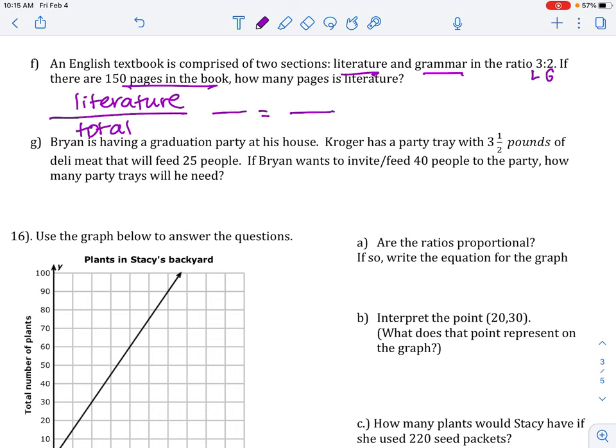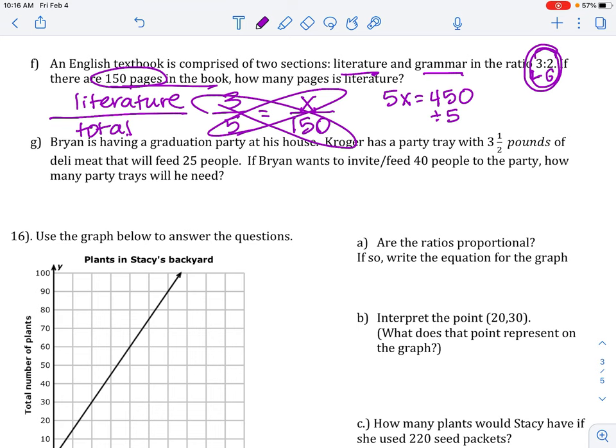Let's set up our proportion. This is one of those totals, which means you're going to have to go over to the original ratio and add. The literature number right here is 3. The total number would be 5, because 3 plus 2 is 5. There are 150 pages in the book. That's a denominator number. So, x in the top, cross multiply to solve. 5x equals 3 times 150, which is 450. Divide as your last step to get x equals 90. And that's how many literature pages are in the book.